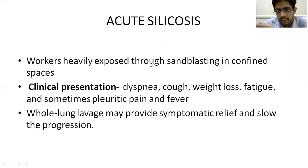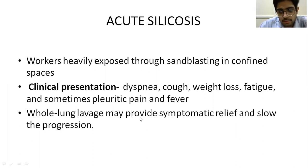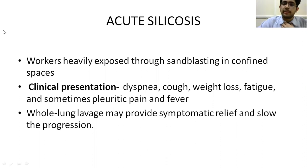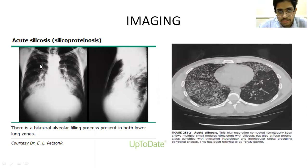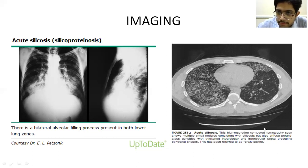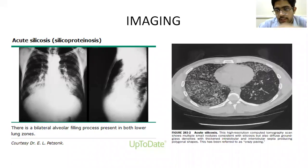Acute silicosis occurs in workers heavily exposed through sandblasting in confined spaces; the clinical presentation is very acute. There is no particular treatment — the only potentially beneficial intervention is whole lung lavage performed with bronchoscopy and single-lung ventilation. Regarding imaging zones: acute silicosis is found predominantly in the lower zones, but subacute and chronic silicosis are found in the upper zones. Asbestosis is also found in the lower zones.